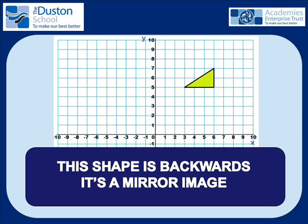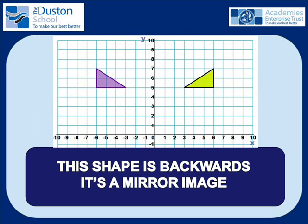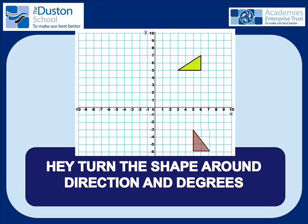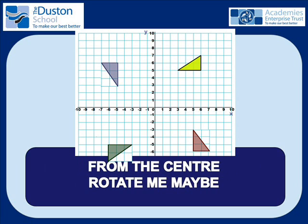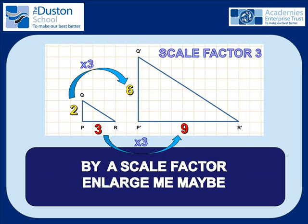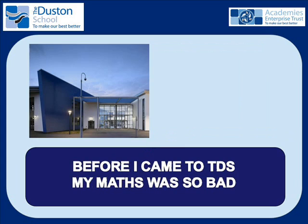This shape is backwards, it's a mirror image, in a line of symmetry — reflect me maybe. Turn the shape around, direction and degrees from the center — rotate me maybe. When the shapes are similar, but what is bigger, by a scale factor — enlarge me maybe.